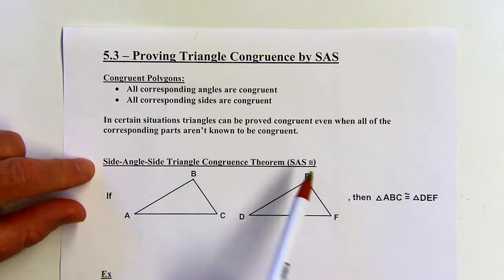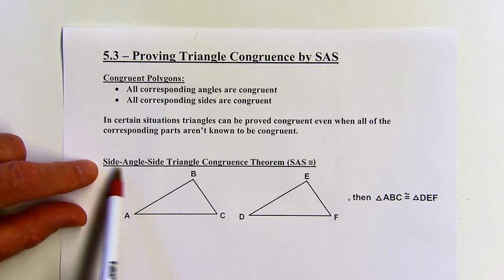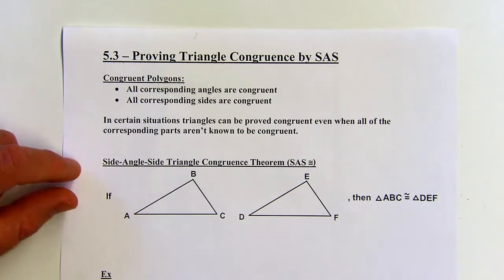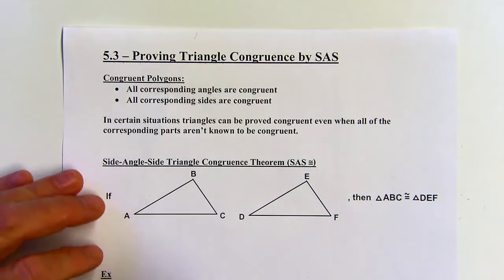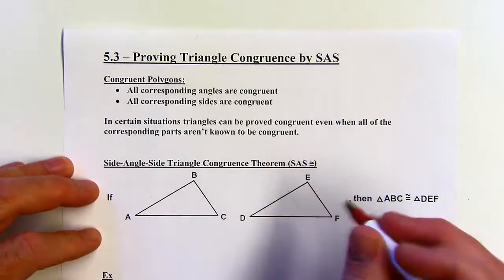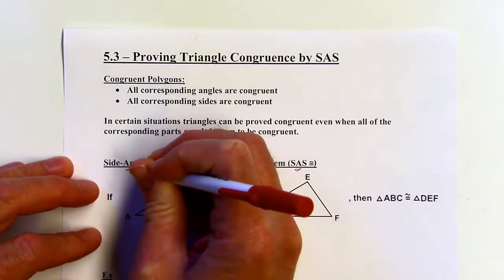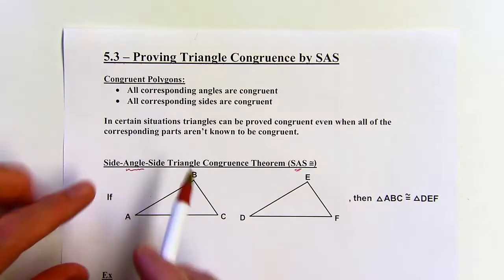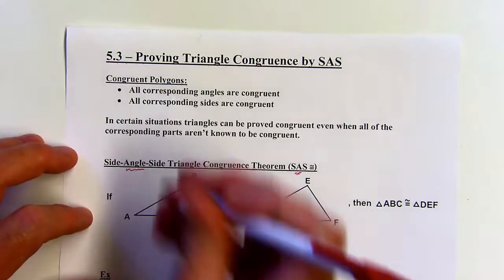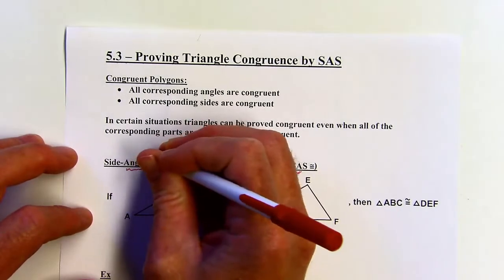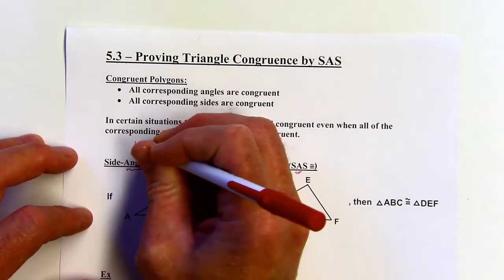It's called SAS for short — SAS Triangle Congruency. The S's and the A's stand for Side Angle Side. Notice the A is in between the two S's, and the angle is in between the two sides in the name of it.